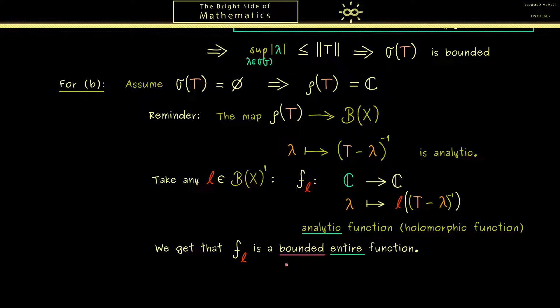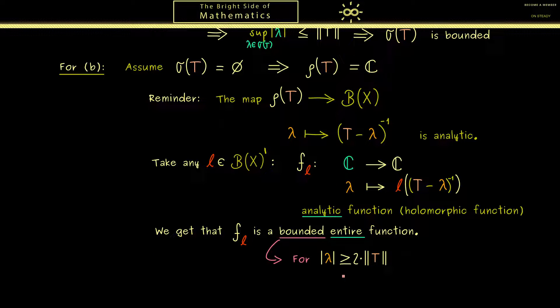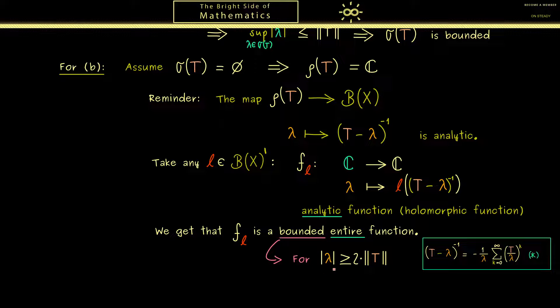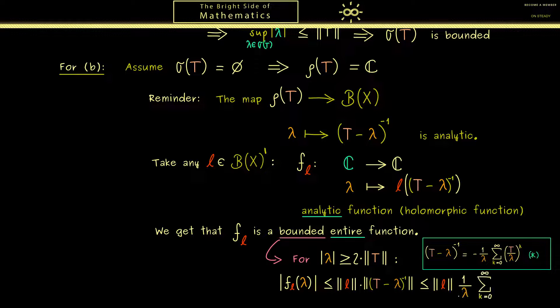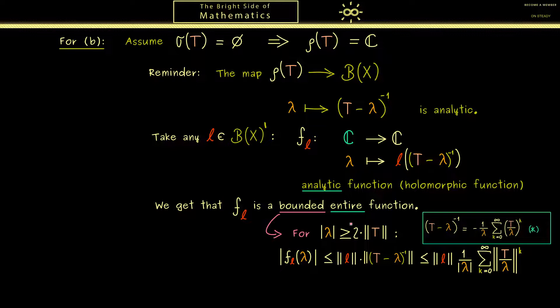Of course there we just have to look what happens for large lambda values. And here for us it turns out that 2 times the operator norm of T is already large enough, because for these lambdas we can simply use our equation star from above. More concretely, let's take f_l of lambda in the absolute value. Then by definition this is less or equal than the operator norm of l times the operator norm of T minus lambda inverse. And exactly for this norm we can use our Neumann series here. This means that this is less or equal where we have 1 over the absolute value of lambda in front, and then comes the infinite sum of the operator norm of T divided by lambda to the power k. And now by assumption we know this operator here has an operator norm which is less or equal than 1 half.